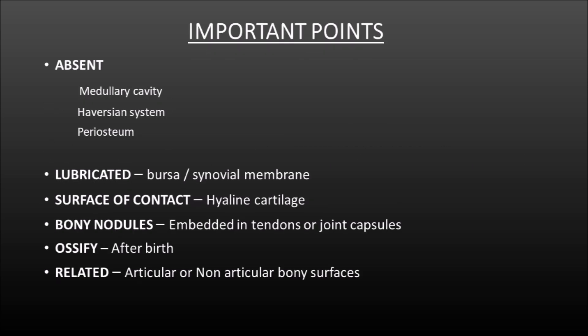Let us brush through the important points now. Medullary cavity, Haversian system, periosteum — all three are absent in sesamoid bone. Sesamoid bone is lubricated with bursa or synovial membrane. The surface of contact is hyaline cartilage. The bony nodules are found embedded in the tendons or joint capsules.